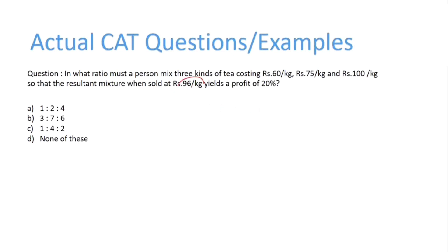Here the selling price is 96 at a profit of 20%. So the cost price will be 96 upon 1.2 which is 80. Now, 80 is the price obtained by mixing 3 units: 60, 75, and 100.